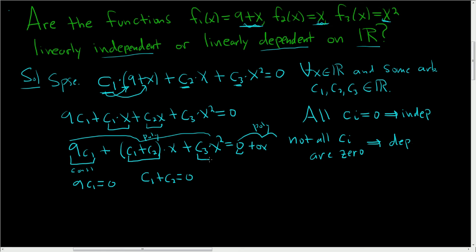Now we look at the coefficient of x squared which is c sub 3. And we set it equal to the coefficient of x squared on the right hand side which is 0x squared. They're not written here but they're really there because these are just 0. So this is 0.